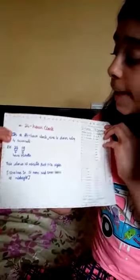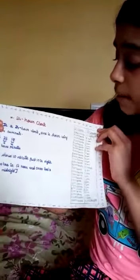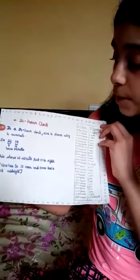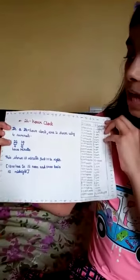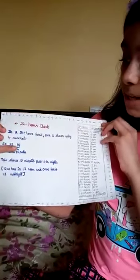24 hour clock. In a 24 hour clock, time is shown using four numerals. Example, 22 and 10. This is hours and this is minutes.